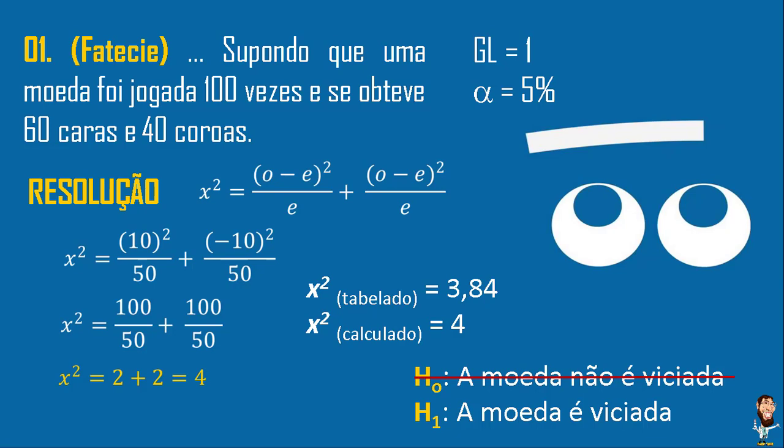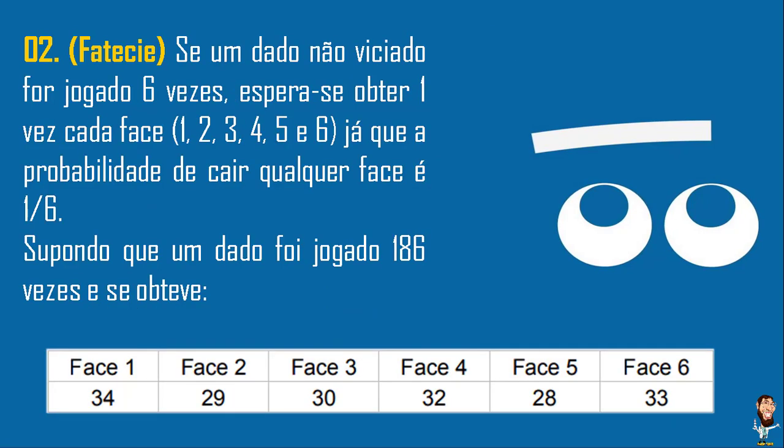Exercício 2. Se um dado não viciado for jogado 6 vezes, espera-se obter uma vez cada face: 1, 2, 3, 4, 5, 6 — já que a probabilidade de cair qualquer face é 1/6. Supondo que o dado tenha sido jogado 186 vezes e se obteve: face 1 = 34, face 2 = 29, face 3 = 30, face 4 = 32, face 5 = 28, face 6 = 33. Essa tabela é o observado. O esperado é pegar 186 dividido por 6 — 1/6 vezes 186 — então o esperado é que cada face caia 31 vezes.